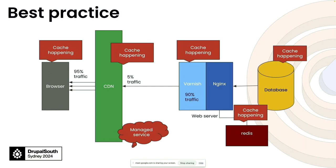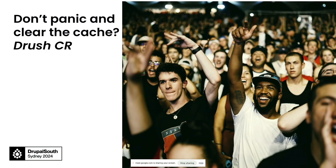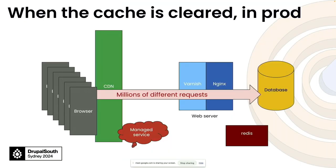Now we have an end-to-end diagram with five potential caching layers, plus auto-scaling on the web server and database server. Our website is pretty safe with all kinds of traffic coming in. But do we need to panic if we clear the cache? If we run 'drush cr' on production, all the cache is cleared — meaning all traffic suddenly hits your web server and database server. All the layers we put in front — Redis, Varnish, CDN — are no longer working because nothing is cached.